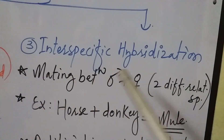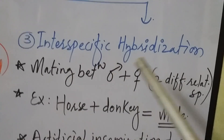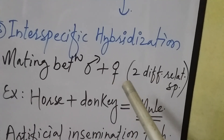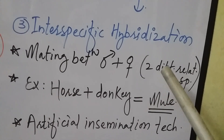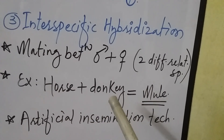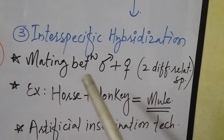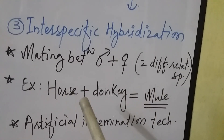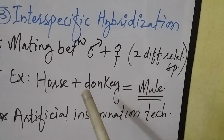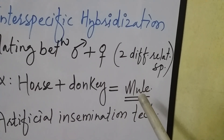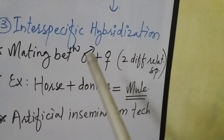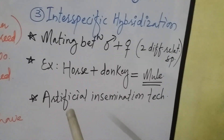Interspecific hybridization is the third type of outbreeding. In this method, mating between a male and female of two different but related species is done. For example, one species — the horse — is mated with another species — the donkey. This interspecific hybridization between the horse and donkey produces the mule.